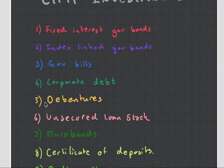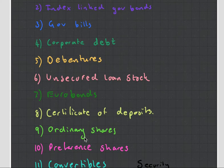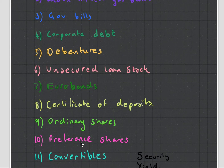Then you have debentures and unsecured loan stocks. There are all sorts of different types of debt that companies can issue, and they have different ranking on when a company gets wound up — determining who gets paid first. Unsecured loan stock gets paid last, so it will have a higher interest rate than your debentures. You then have Eurobonds, which is when a company issues bonds internationally, so there might be a currency component, but they're very large and they're for big companies.